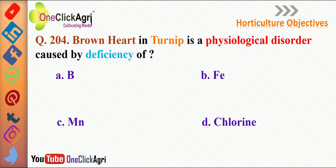Brown heart in turnip is a physiological disorder caused by deficiency of boron. The other options have already been discussed in previous lectures — please watch all previous lectures.